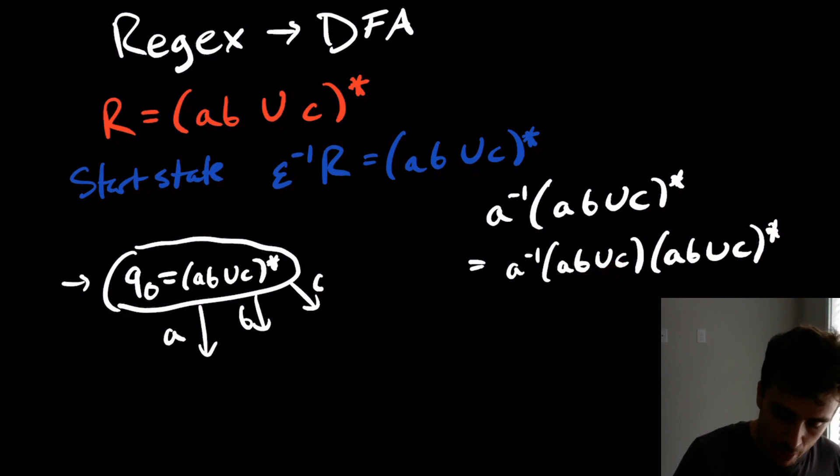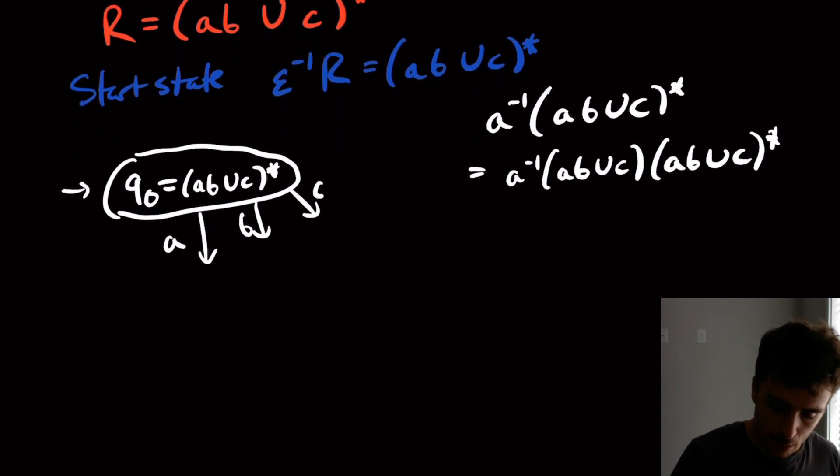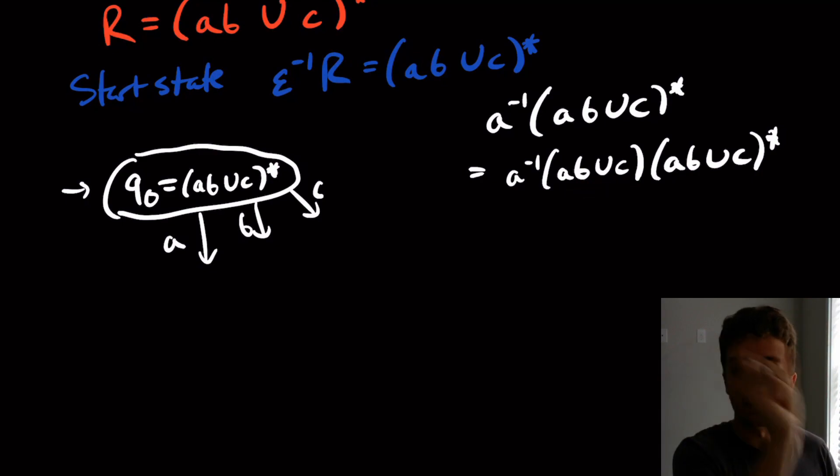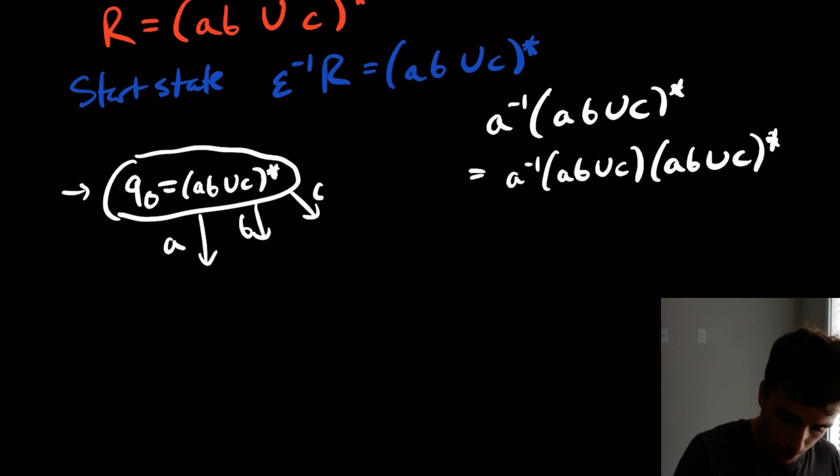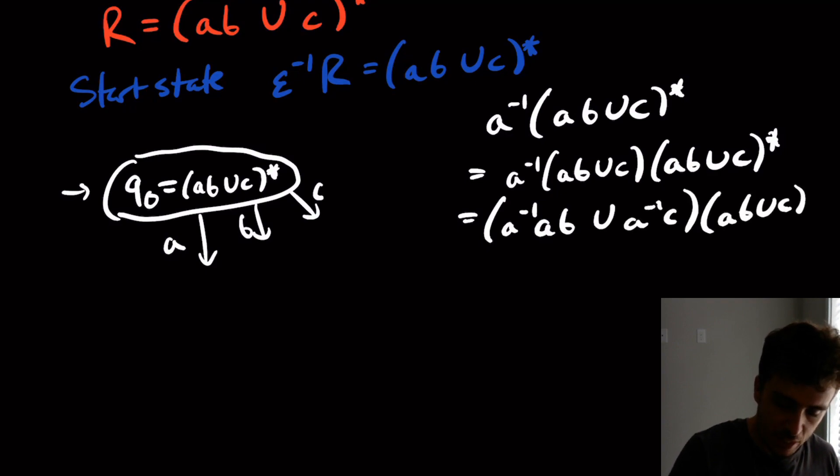So this is going to be A inverse of this whole regex without the star and then with the star. And if you are unsure of why that is, go watch the video of how we actually derive this. Whenever you have a derivative with something that's union, you apply the derivative across the two things that are union, kind of like the distribution rule when you do derivatives in calculus. So that's going to be A inverse AB union A inverse C, and then we still have this thing on the end.